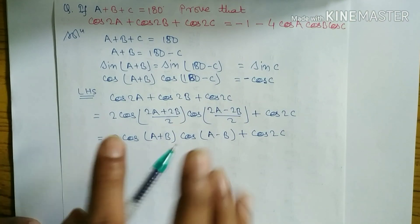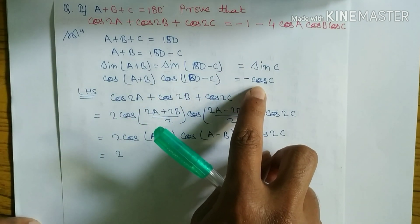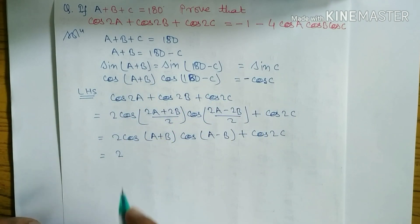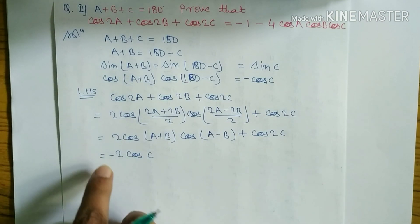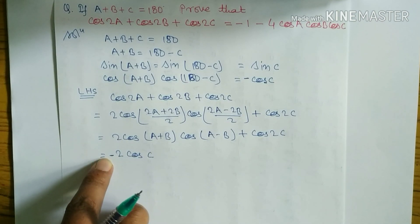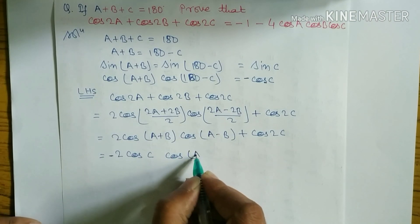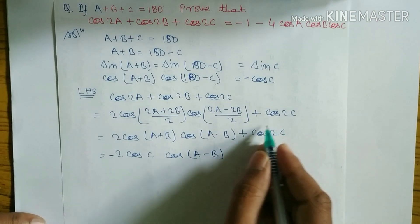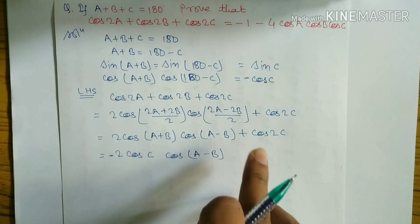Now substituting: cos(A+B) equals minus cos C, so 2 cos(A+B) becomes 2 times minus cos C. We can write minus 2 cos C times cos(A-B), plus cos 2C.